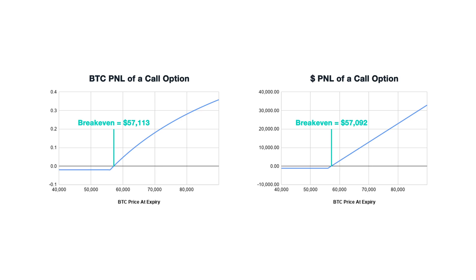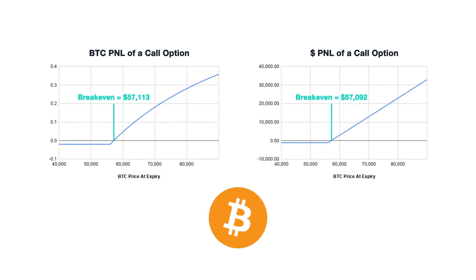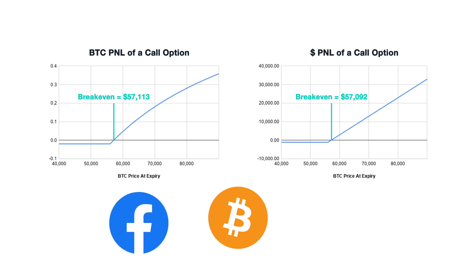To competently trade any instrument, you need to be fully aware of how and where you will make a profit, where your risk lies, and the magnitude of each. These differences we're going to work through in section 4 are not specific to bitcoin or even cryptocurrency. They arise simply because we are using the underlying asset itself as the collateral, and any profit or loss is also paid in this same asset. The same formulas would apply if we were using Facebook shares as collateral for trading Facebook options or Amazon shares as collateral for Amazon options.